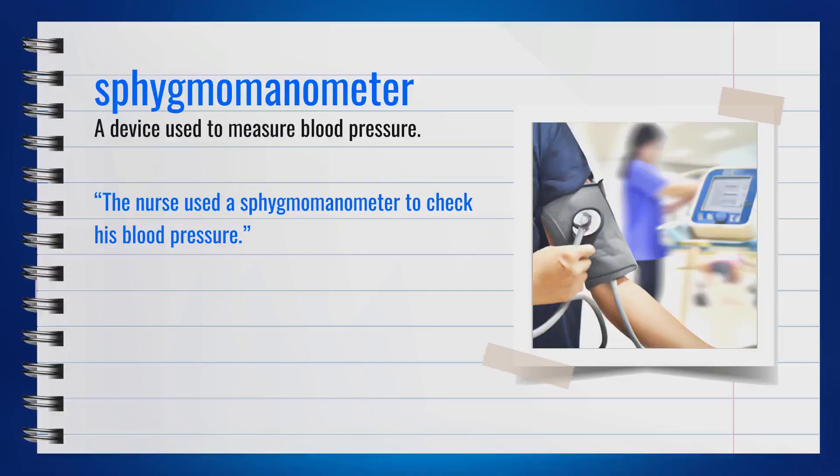The word sphygmomanometer is a noun, spelled S-P-H-Y-G-M-O-M-A-N-O-M-E-T-E-R. It's a device used to measure blood pressure. Pronounced 'sphygmomanometer.' An alternative term could be blood pressure monitor. For example, the nurse used a sphygmomanometer to check his blood pressure.